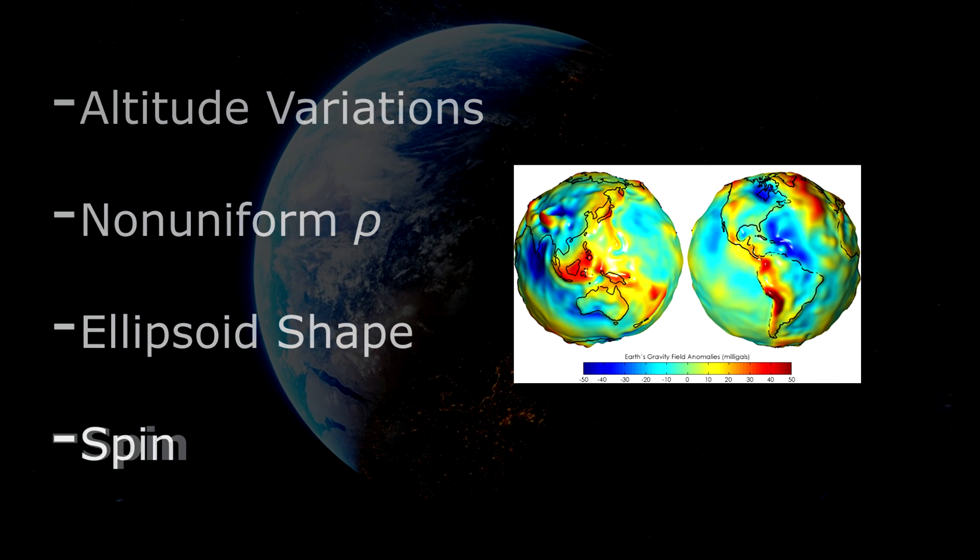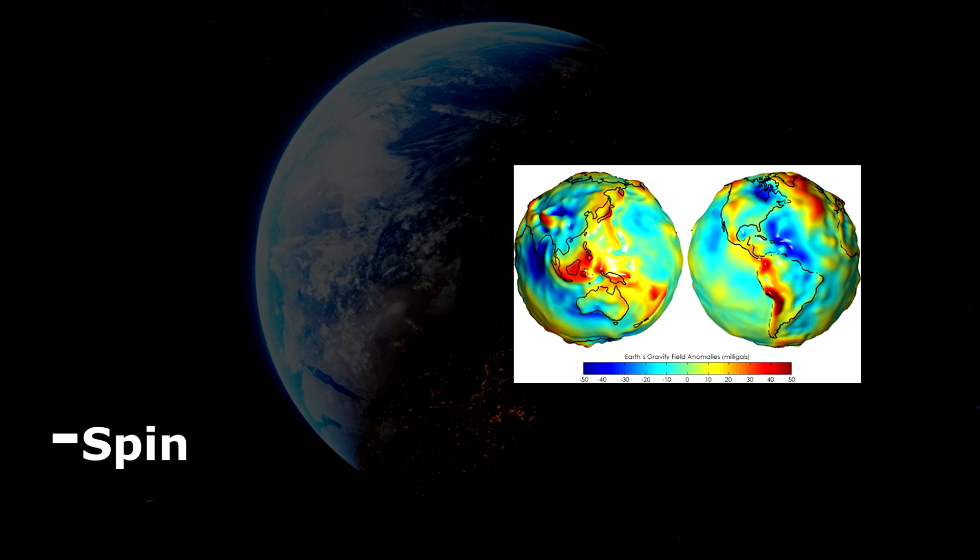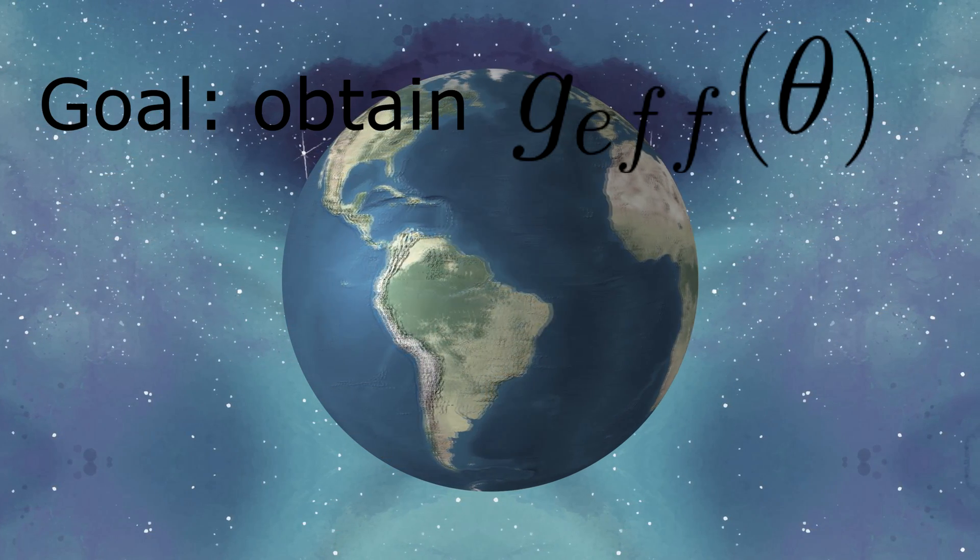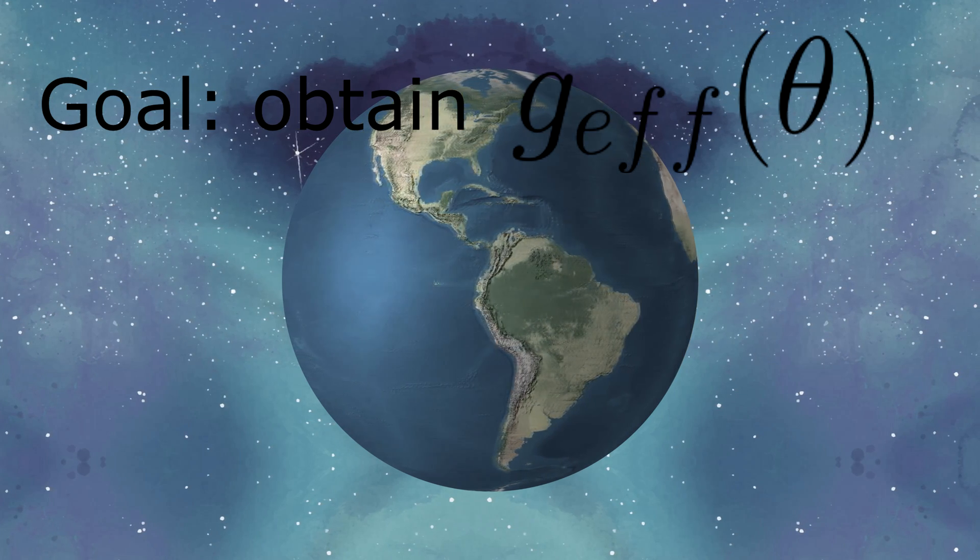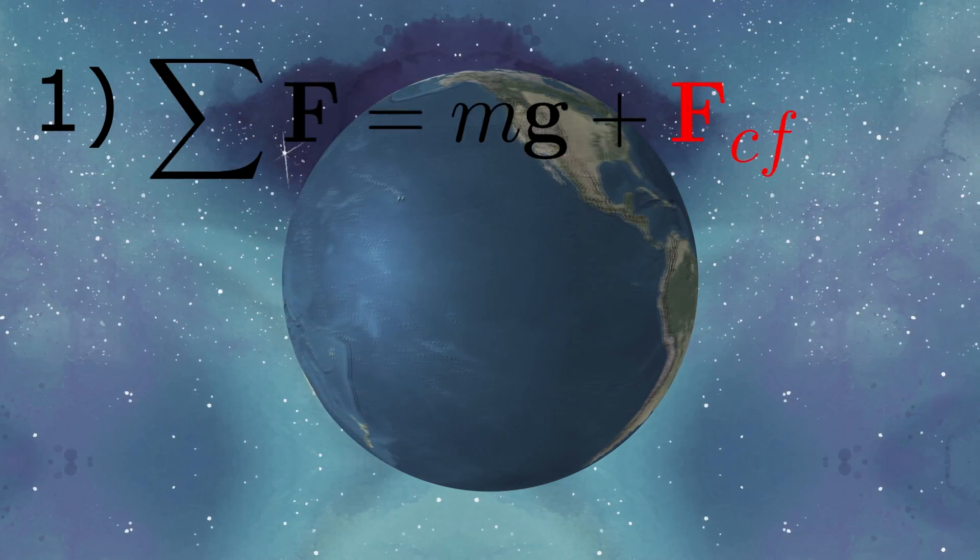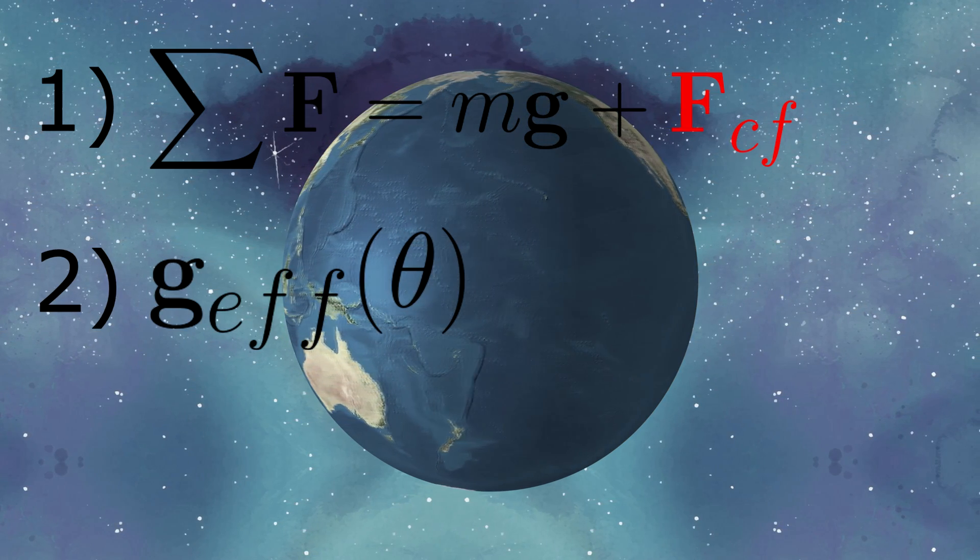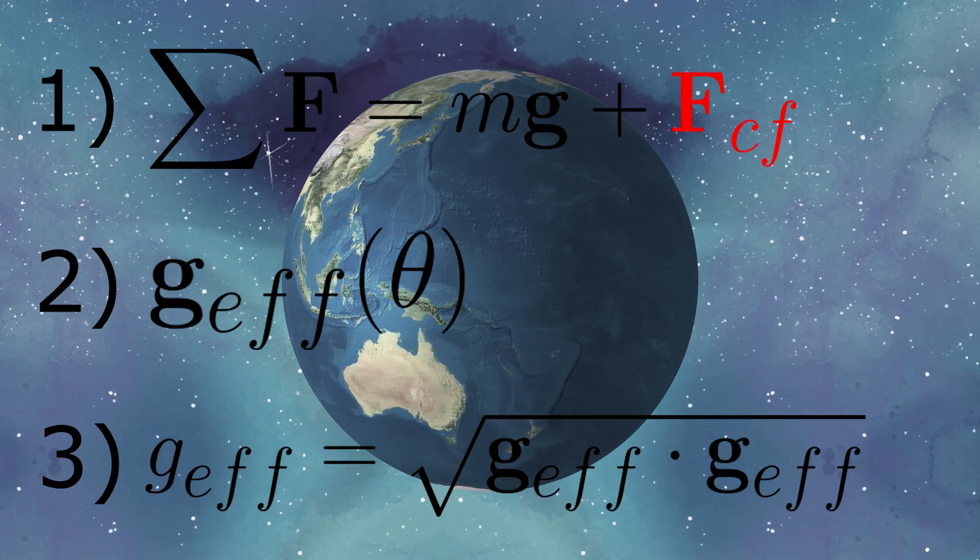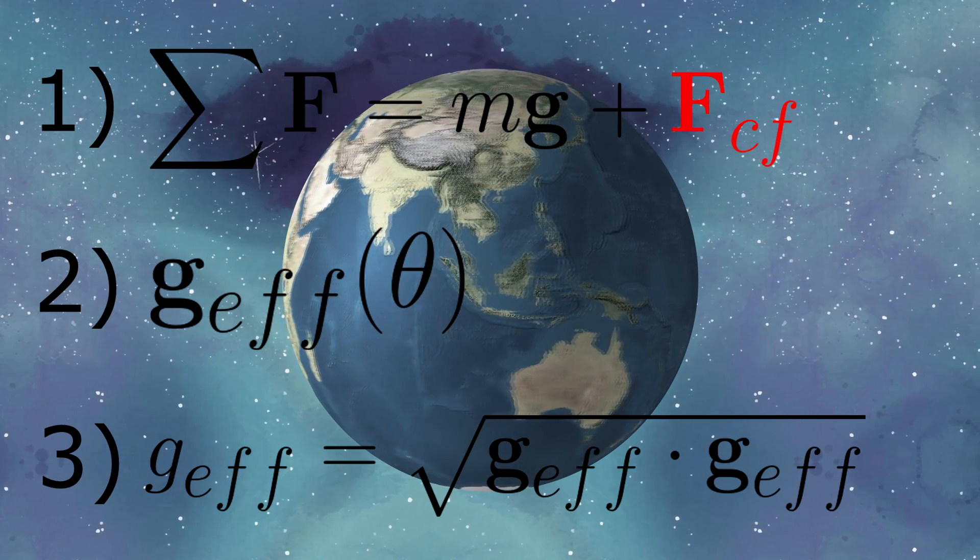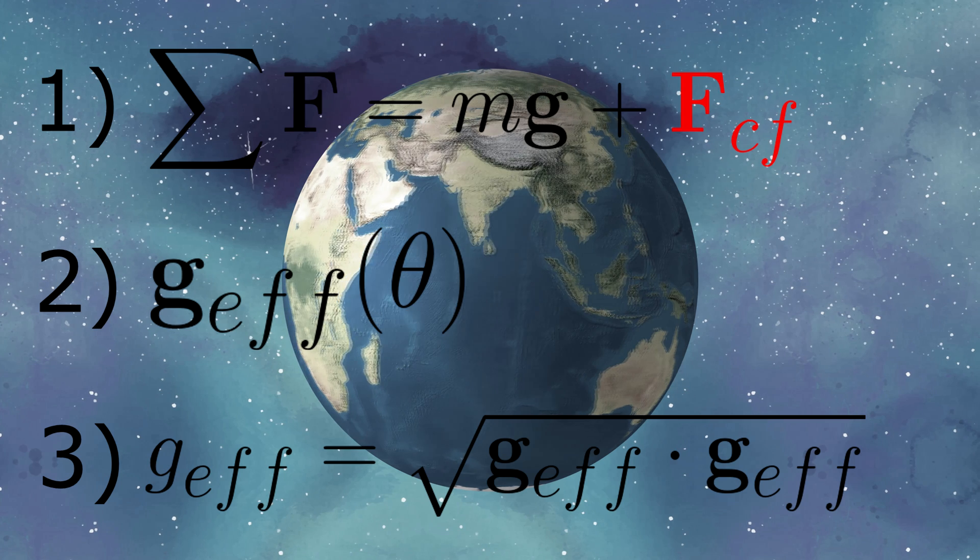In this video, we're going to focus on the fourth effect, the spin. We'll determine our effective gravity, g-effective, as a function of latitude angle by including a centrifugal force correction. This is going to give us a vectorial answer for g-effective, and in calculating its magnitude, we'll use a highly accurate binomial approximation to give us a clean result.